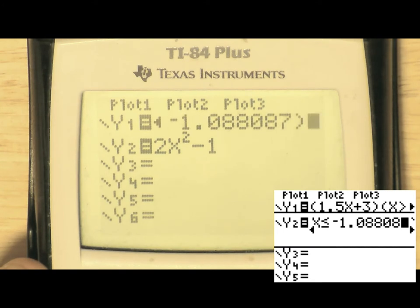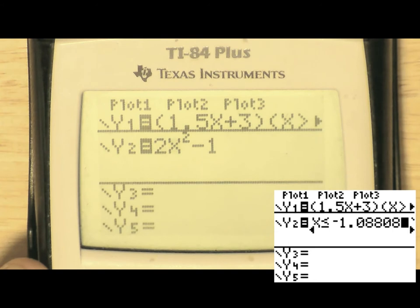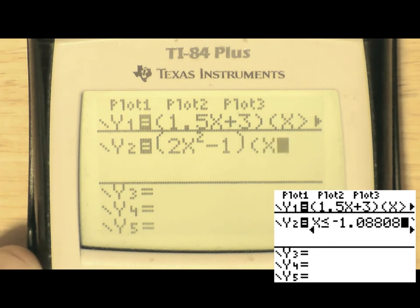And for the less than or equal to symbol, now notice we have to also similarly enter brackets for the entire y2 function and then multiply that by the entire restriction. This time, it's less than or equal to negative 1.08808 and 7.